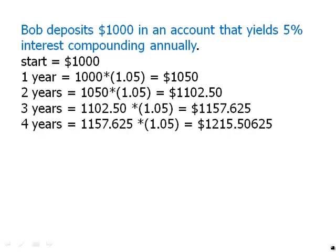These numbers are starting to get very complex, so don't worry about getting these by hand — you'd need a calculator. Notice that after four years, simple interest would get up to $1,200. Here we have $1,215.50. We've done a little bit better than simple interest would do for us.